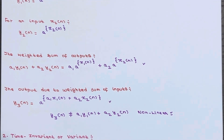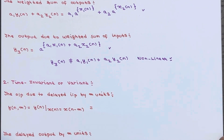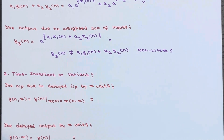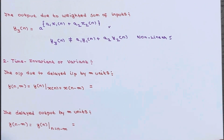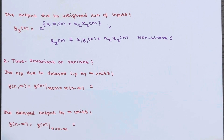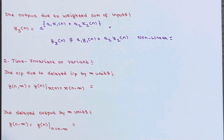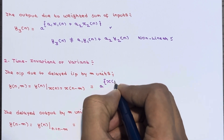Now let's check for time invariance — whether our system is time invariant or not. We need to calculate two things: the output due to delayed input by m units, and the delayed output by m units — that is y(n,m) and y(n−m). When input x(n) is replaced by x(n−m), the output becomes a^x(n−m).